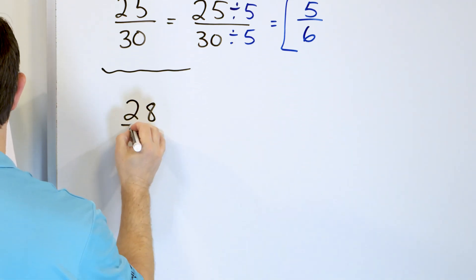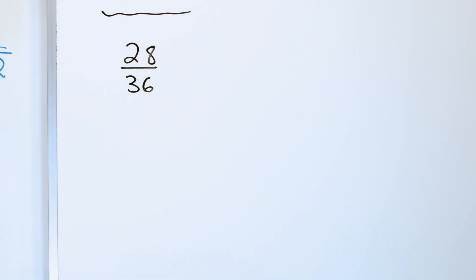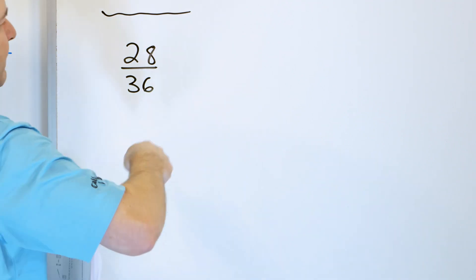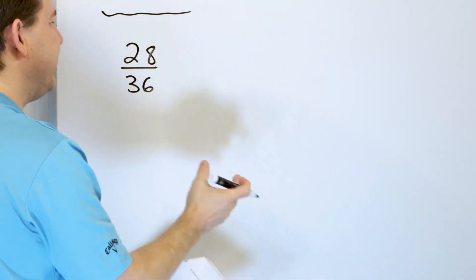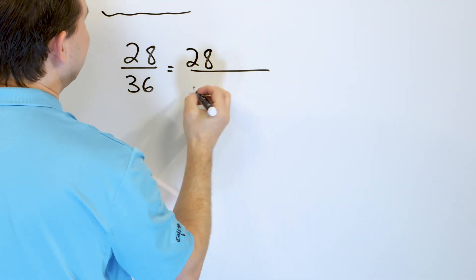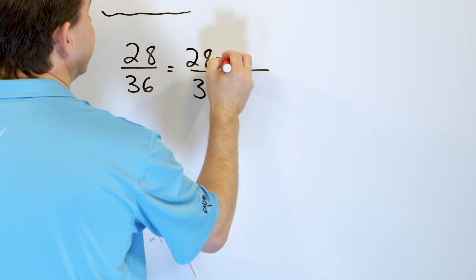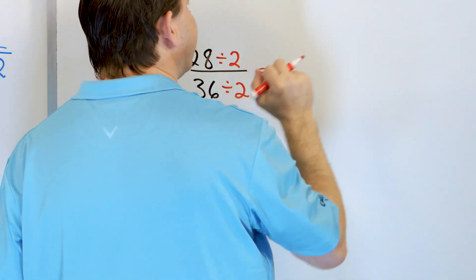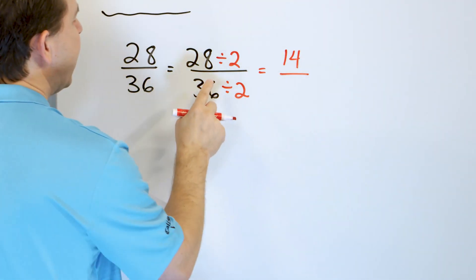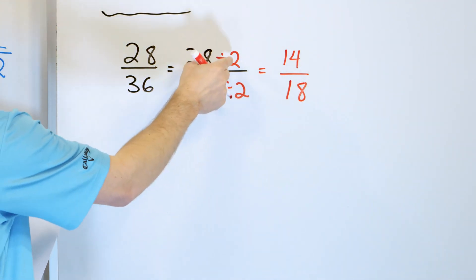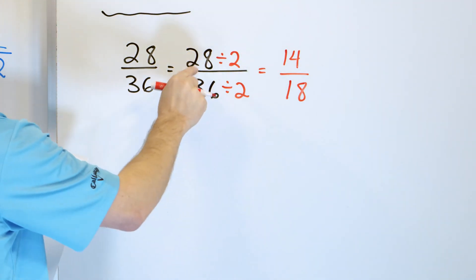Problem 5: 28/36. There's almost certainly a larger factor I could divide by, but what jumps out immediately is that both are even numbers. Rather than write all the factors to find the greatest common factor, I'll just start with dividing by 2. 28 divided by 2 is 14, and 36 divided by 2 is 18. If you're unsure about those divisions, go back and review our division lessons.